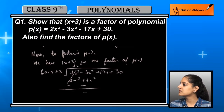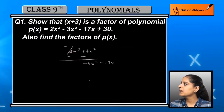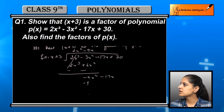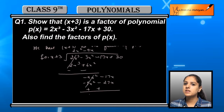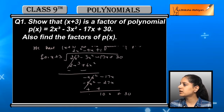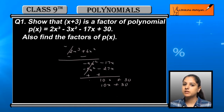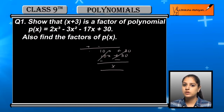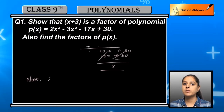By long division method: first quotient term आएगी 2x². 2x² into x = 2x³ and 2x² into 3 = 6x², sign changed, first terms cancelled. Second quotient term is minus 9x. Minus 9x into x = minus 9x², minus 9x into 3 = minus 27x, first terms cancelled. Sign change के बाद हमारे पास बचा 10x plus 30. Third quotient term is plus 10. Further multiply करने पर 10x plus 30, sign change करने के बाद remainder = 0.